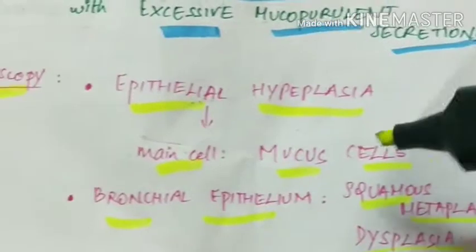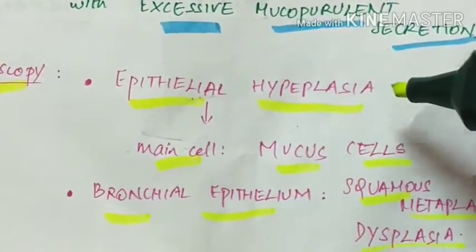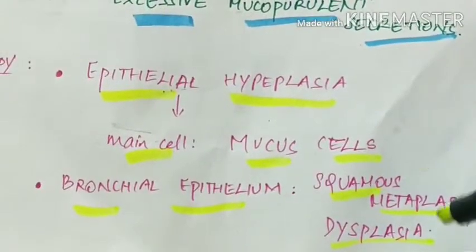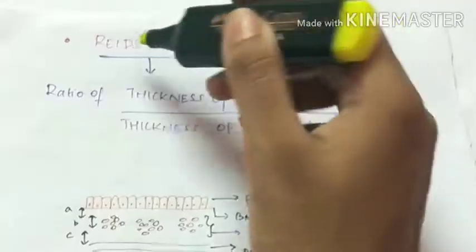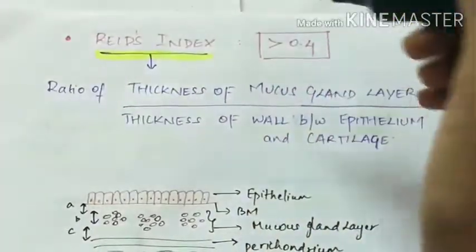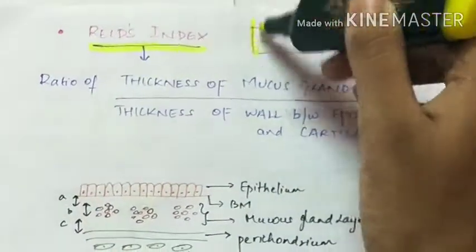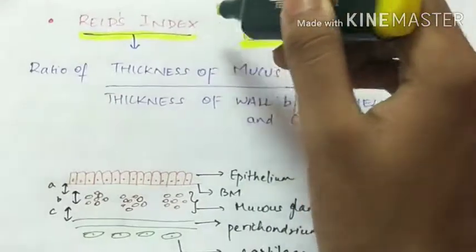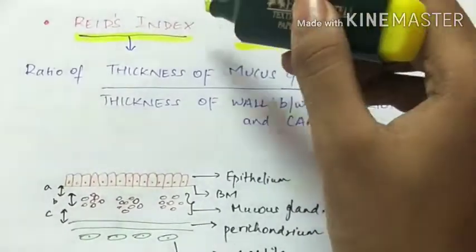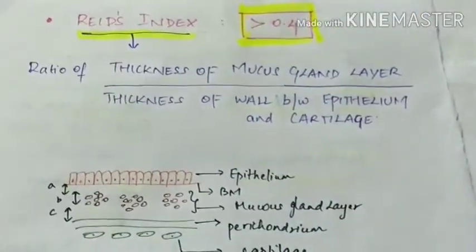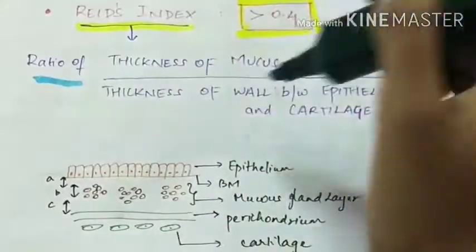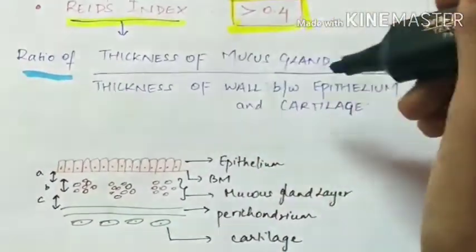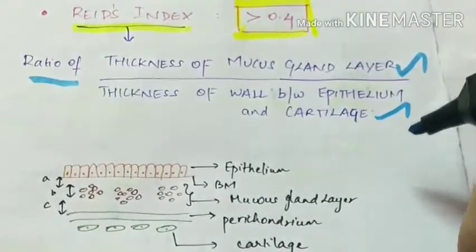The Reid's index in chronic bronchitis is more than 0.4. What is Reid's index? Reid's index is the ratio of the thickness of the mucous gland layer to the thickness of the wall between the epithelium and the cartilage.